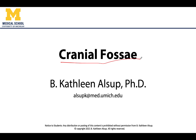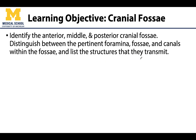Let's get started. We will focus on the cranial fossae, of which there are three: the anterior, the middle, and the posterior. We will talk about where these are located and which foramina or passageways are associated with each.